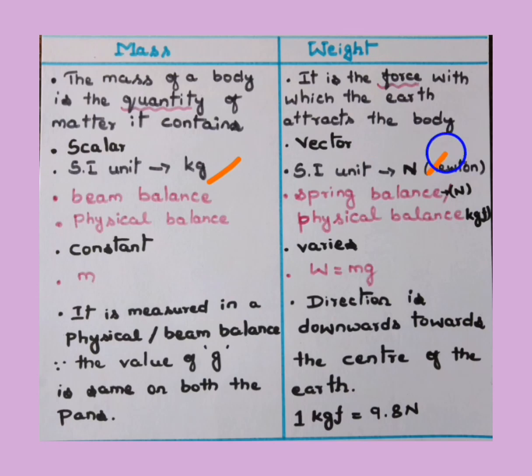Mass of an object can be measured in beam balance and also using physical balance, whereas weight of an object is measured using spring balance. In case of newton if you want to measure, and even if it is in case of kilogram force, we use physical balance to measure the weight of an object.